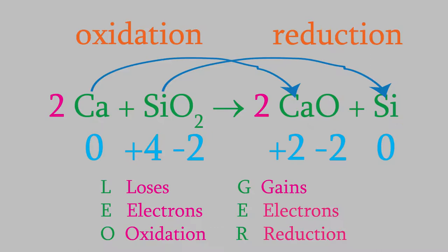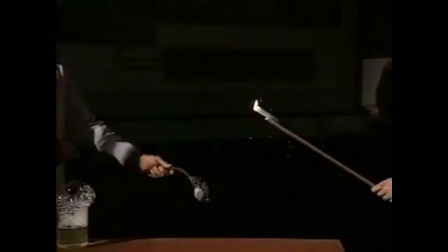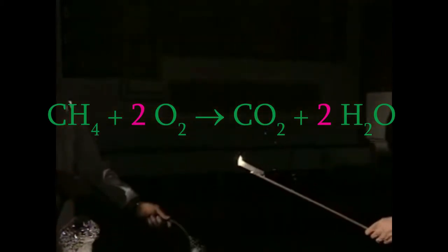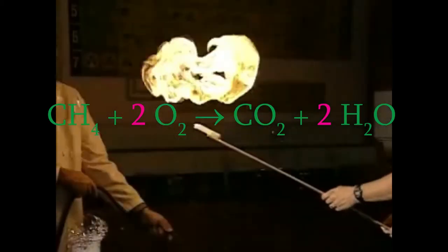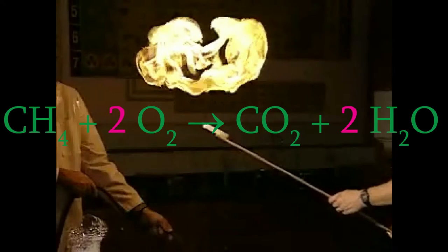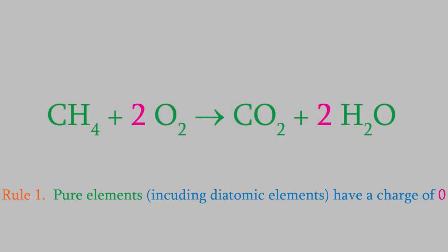Let's try another example. As I mentioned earlier, combustion reactions are redox reactions. Here's the balanced reaction for the combustion of methane. What are the charges on the atoms in this reaction? Well, by rule one, any pure element has a charge of zero. And that includes diatomic elements. So the oxygens in O2 have a charge of zero.